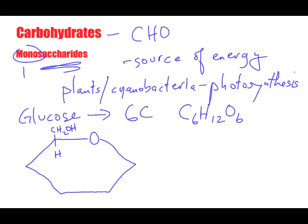So we have five carbons within the hexagon plus this sixth one that branches off. Then we have H and OH — the hydroxyl groups, or alcohol groups. These are very polar ends in water. We alternate: OH and H, H at the top, OH at the bottom. Here we have an actual molecule of glucose — a very important carbohydrate and monosaccharide, because this is a one sugar. This shape is our simple sugar.